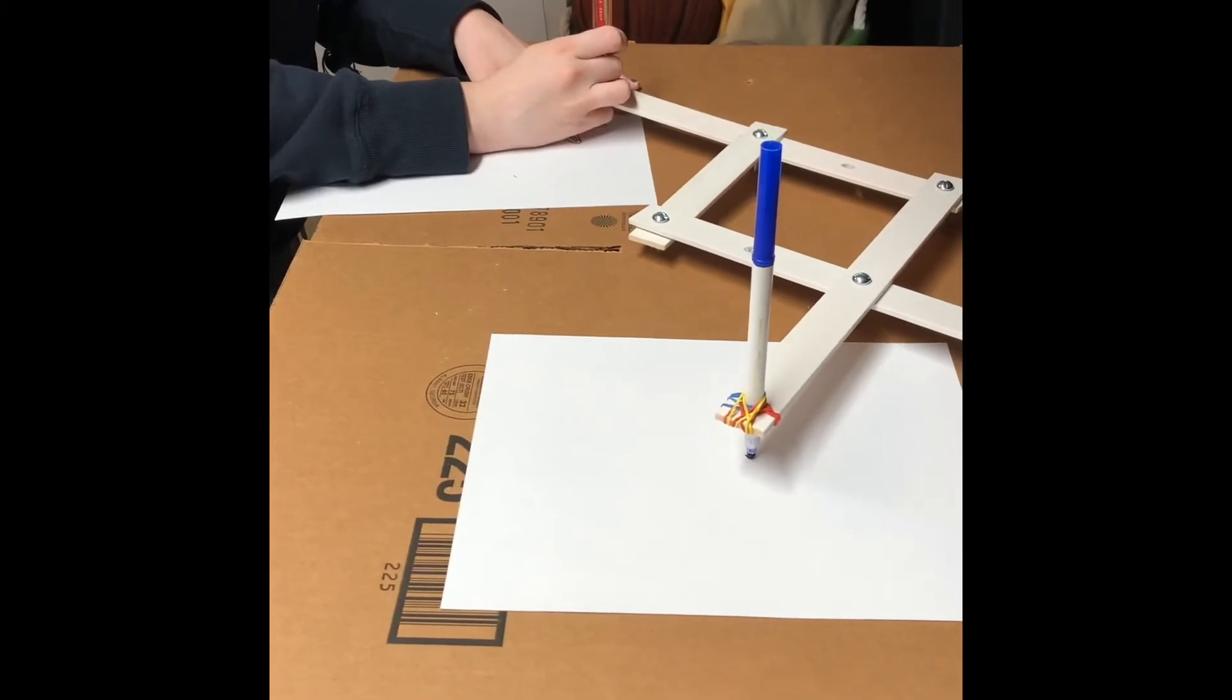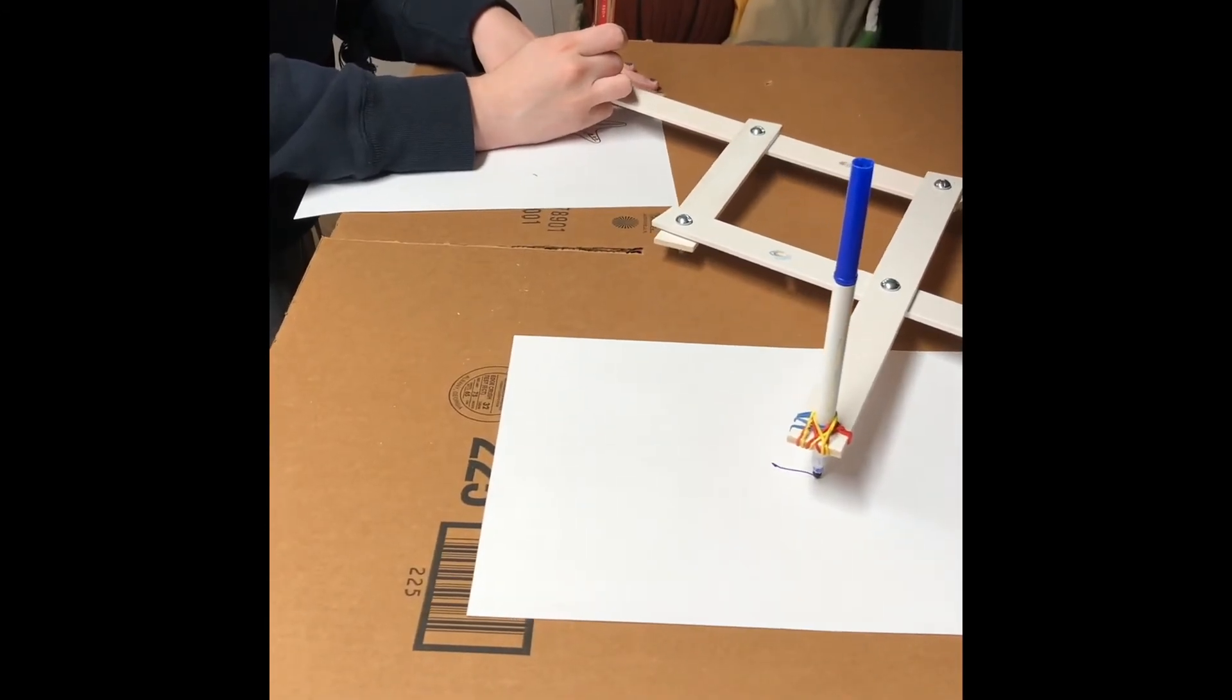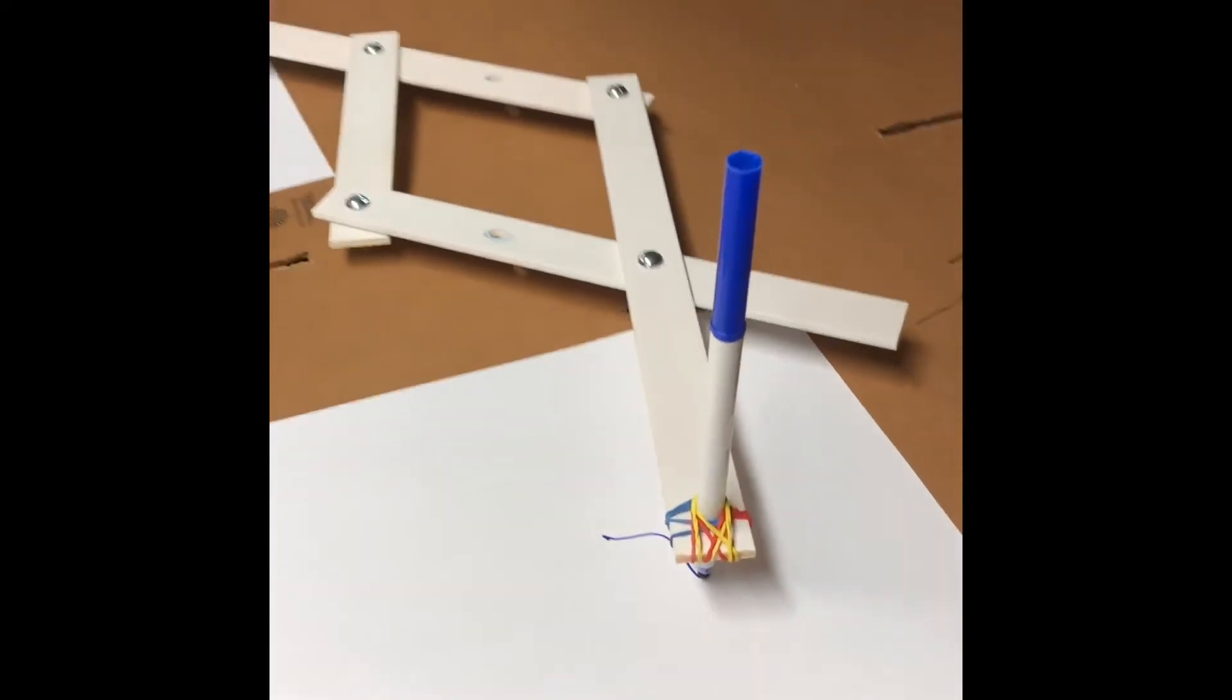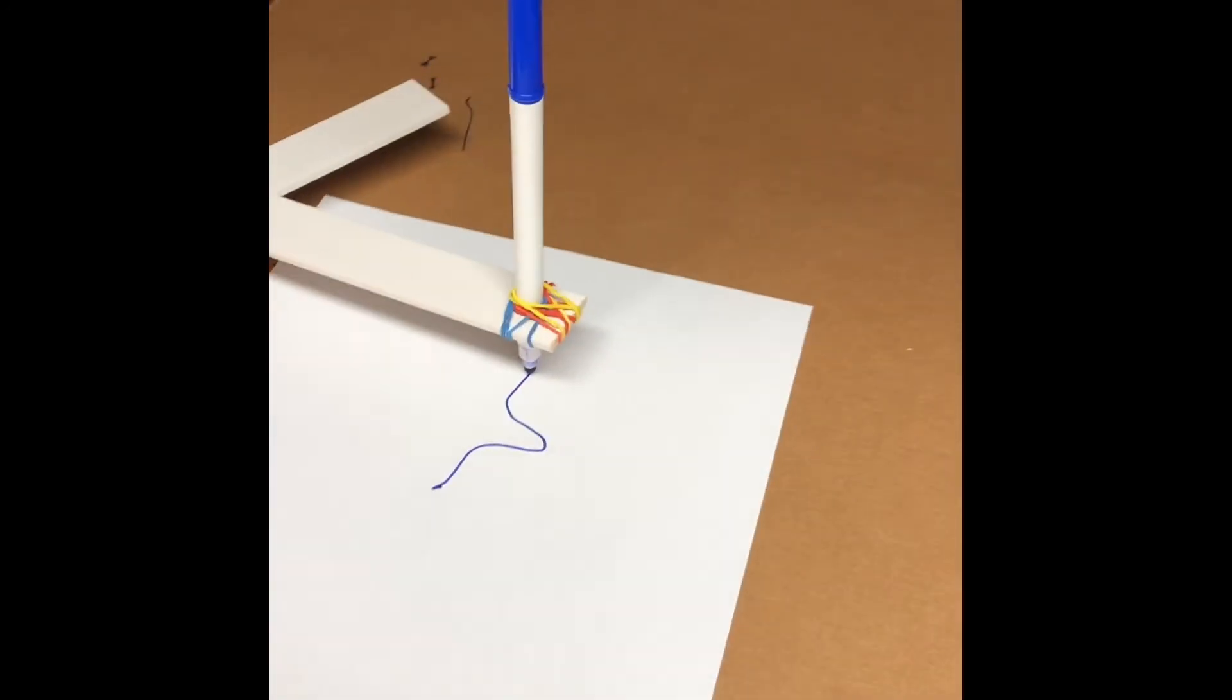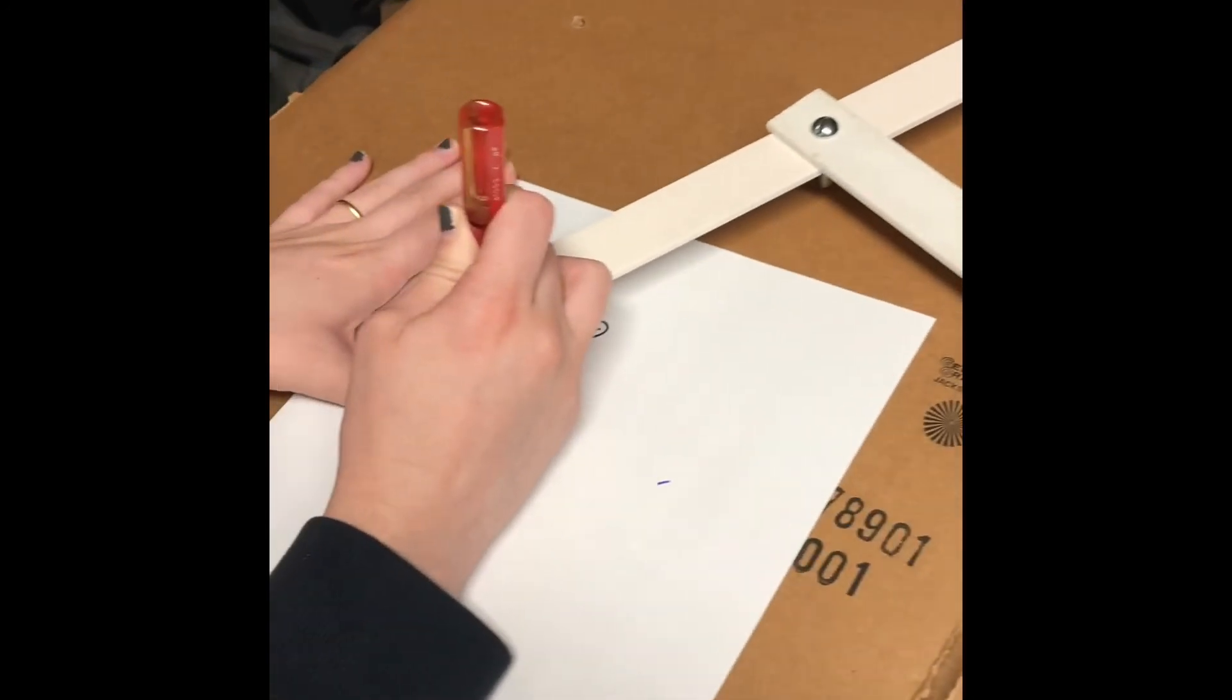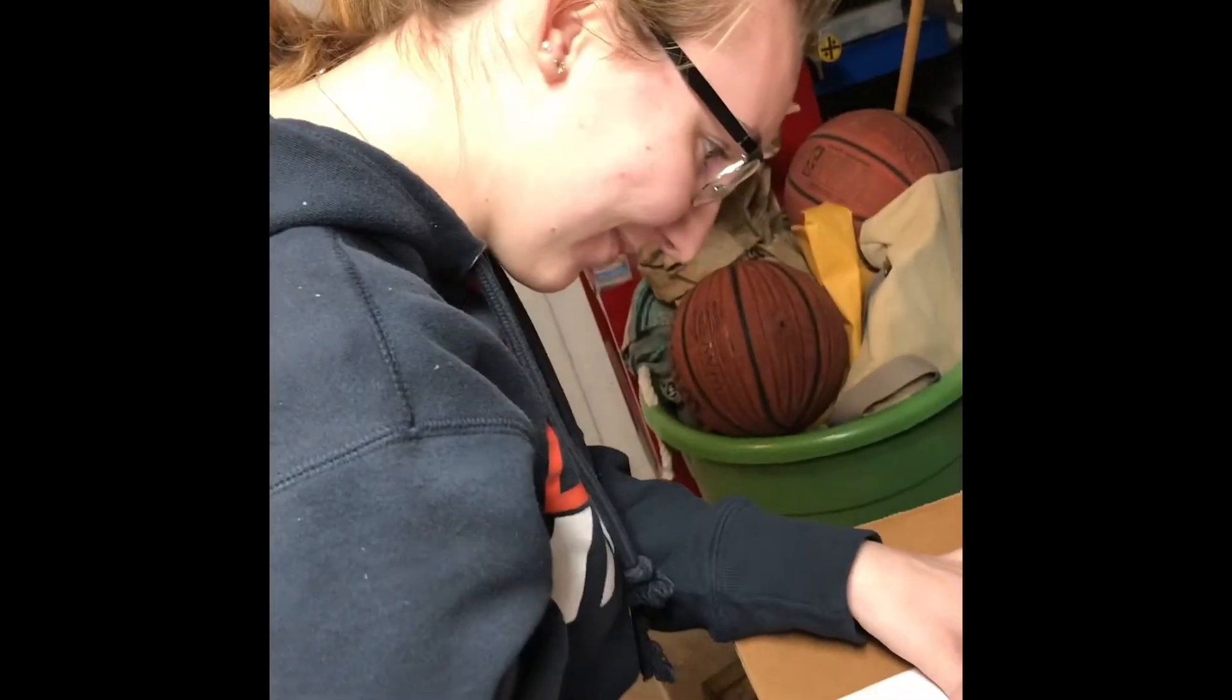Now here's my setup for the pantograph to have a scaling factor of one. To do this, I could simply just switch the tracing point and the anchor point.